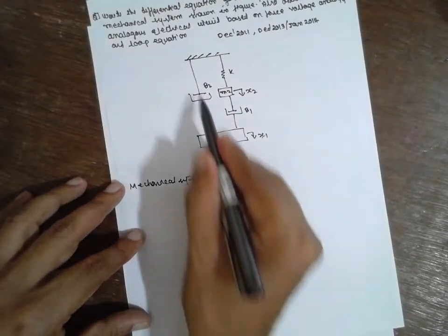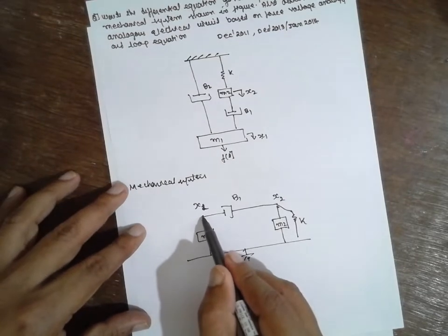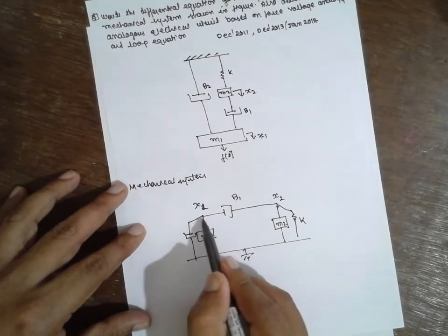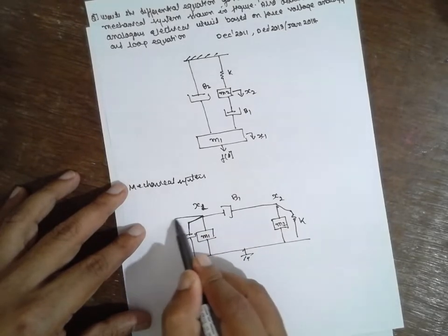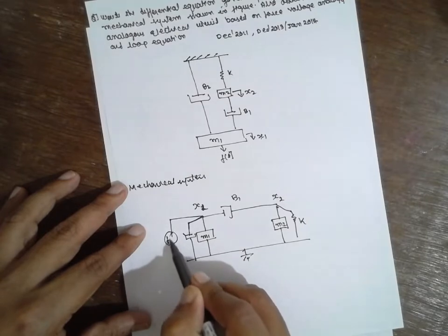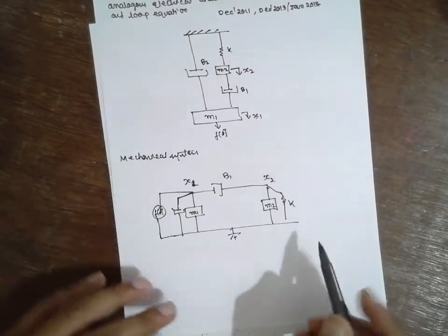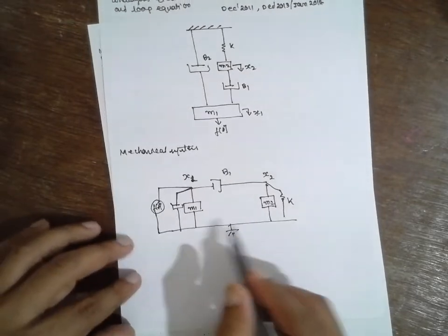Now, M1 to this one, dashboard is there. F of t connects. Now, this is nothing but B2.